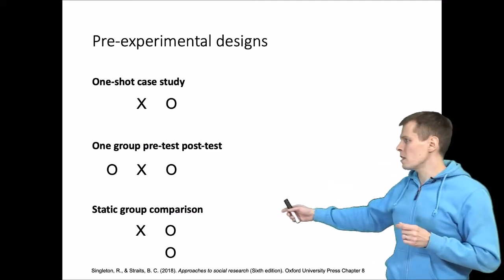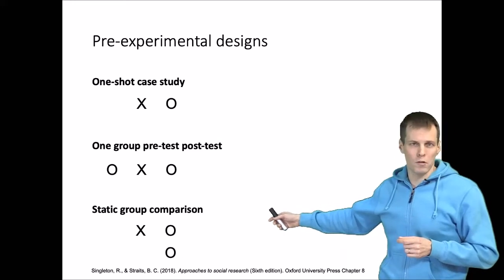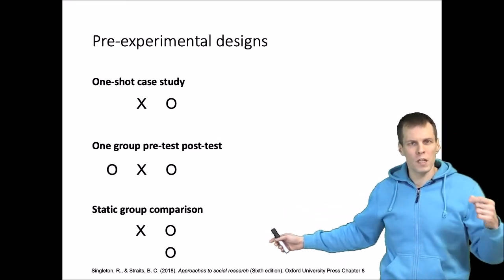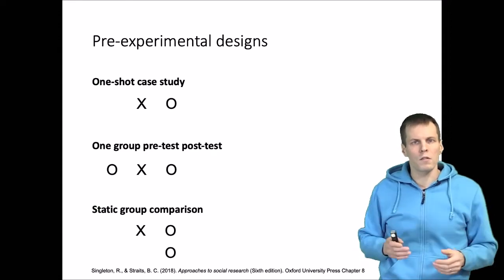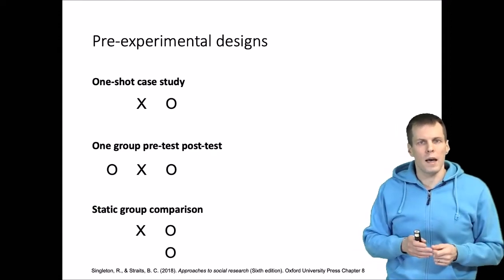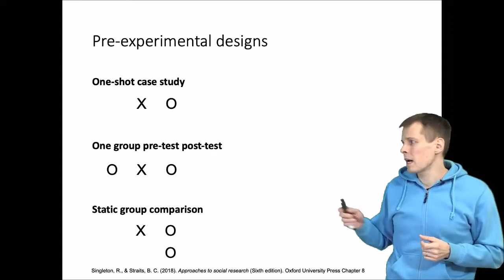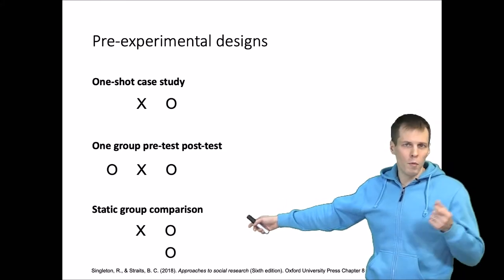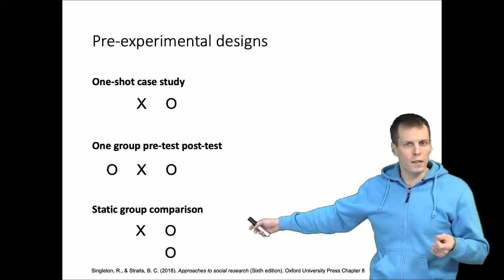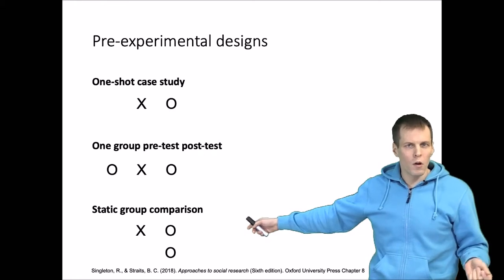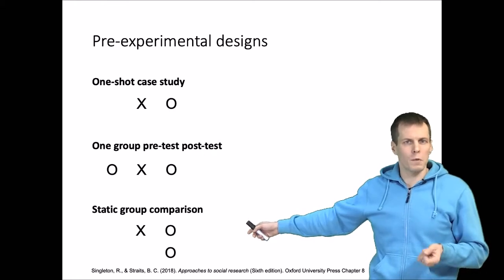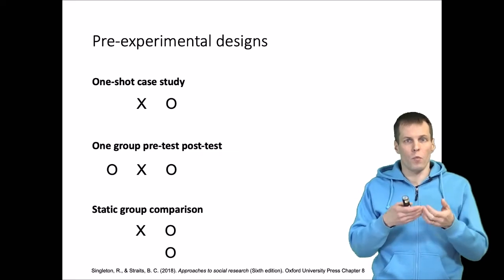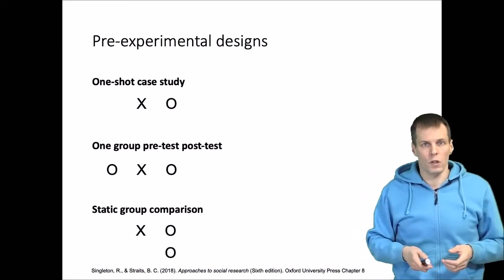A third is the static group comparison. Here we have a group that receives treatment and a group that doesn't, but it is not randomized. Even if we observe a difference after the treatment, the problem is that we don't know whether that difference is due to the treatment or whether it was a difference that existed even before we did anything with the two groups.